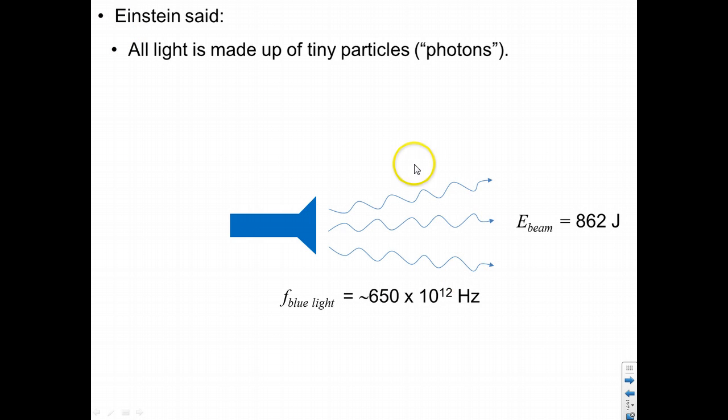Einstein said that all light, including this beam, is made up of tiny light particles called photons. So in other words, the light coming from this flashlight, said Einstein,